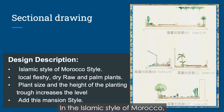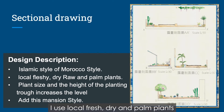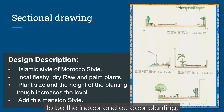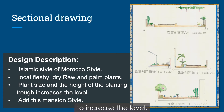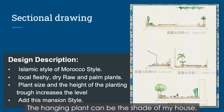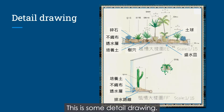My design description is: in the Islamic style of Morocco, I use local fresh, dry, and palm trees as the indoor and outdoor planting. Using plant size and height of the plant to increase the level. The hanging plants can provide shade for my house and add a mansion style. And this is some detailed drawing.